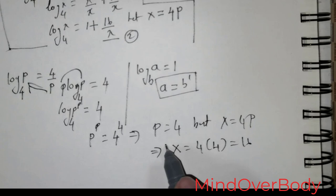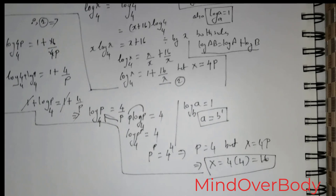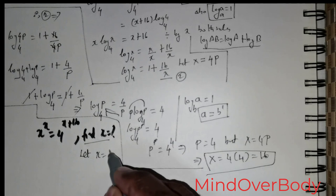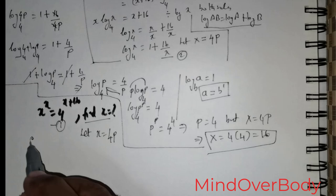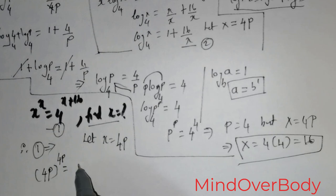We have extracted the solution x equals 16. Now let me demonstrate using another method. Method 2: we have x raised to the power x equals 4 raised to the power x plus 16. I take x to be equal to 4p. So I can rewrite the equation as 4p raised to the power 4p equals 4 raised to the power 4p plus 16.